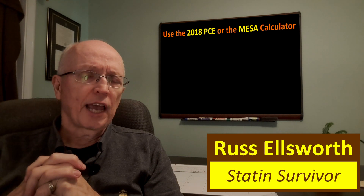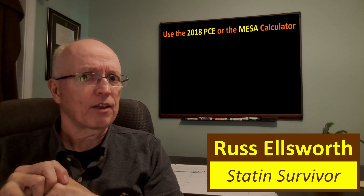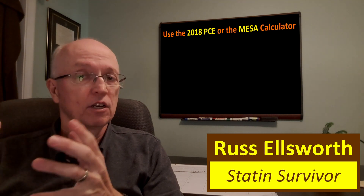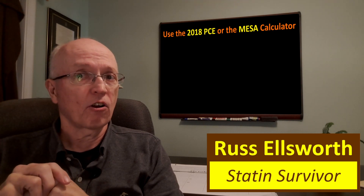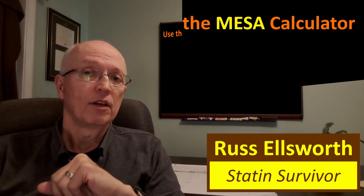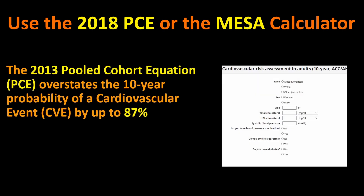If your doctor is using a risk calculation to tell you what your 10-year risk is, they ought to at least use the most accurate one out there, and that's the 2018 pooled cohort equation based risk calculator. Or if you have a coronary artery calcium score you can use the MESA calculator. There'll be links to each of these in the description. The problem is most doctors are using the older 2013 pooled cohort equation risk calculator, because that's what the American Heart Association and American College of Cardiology sites give for their calculations, and these are known to be extremely high — 87% on average too high.